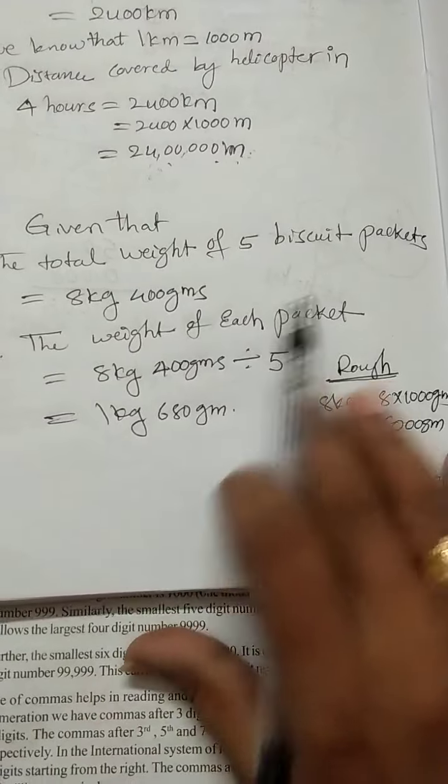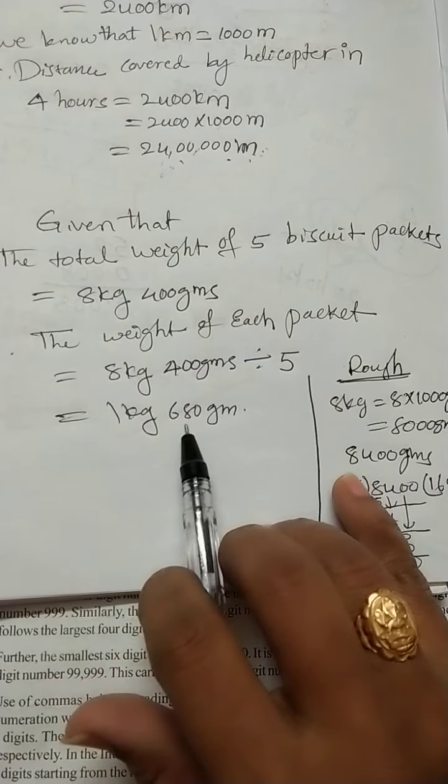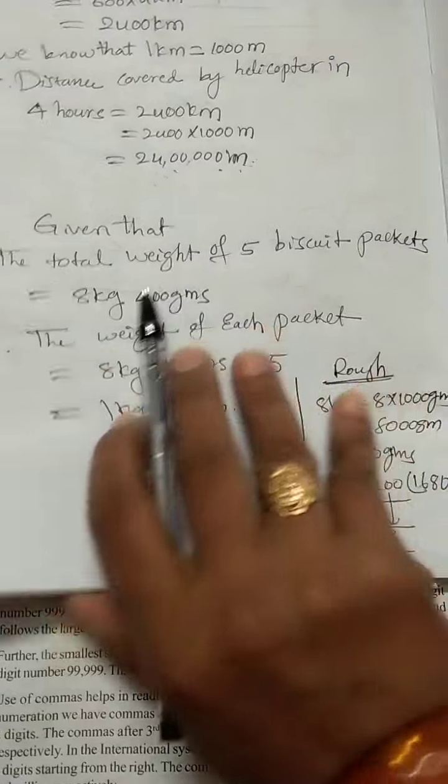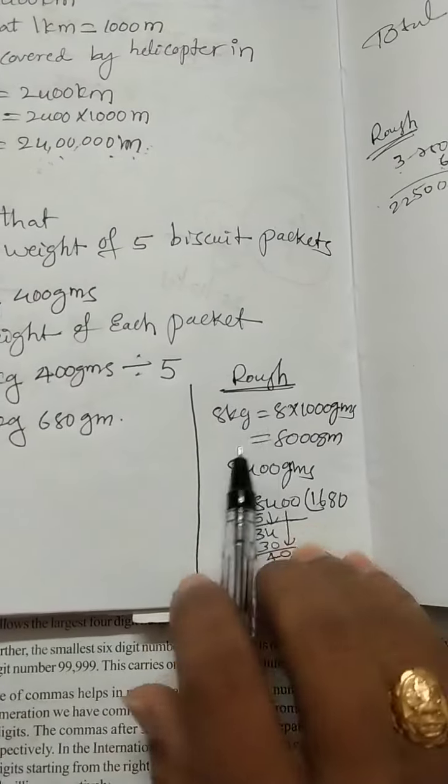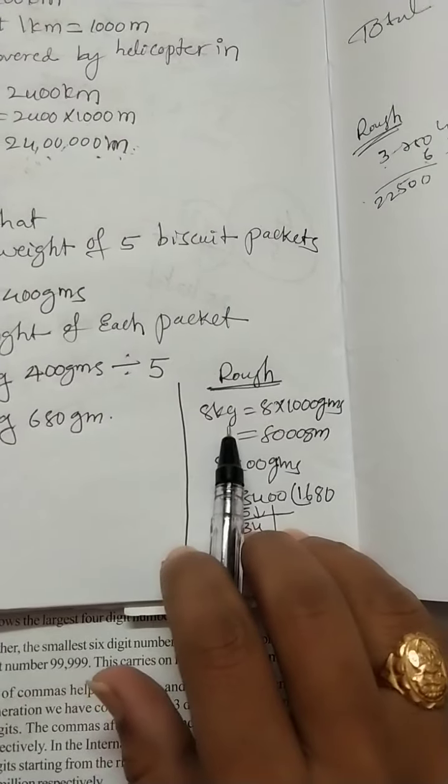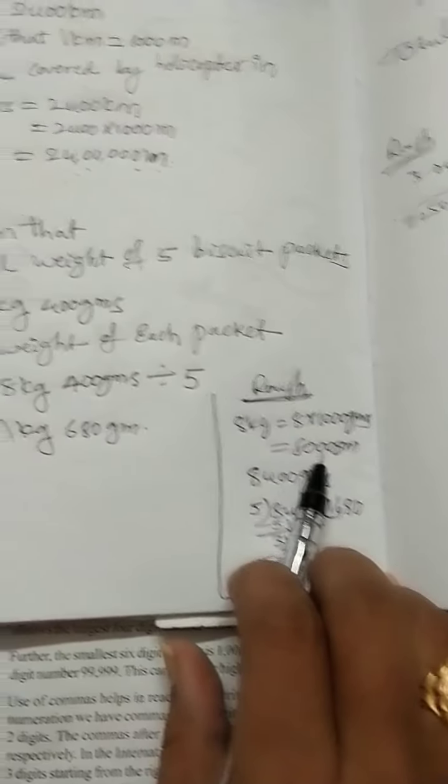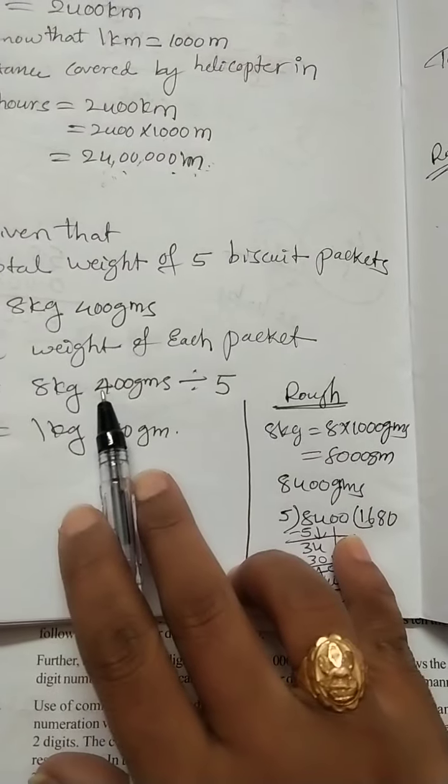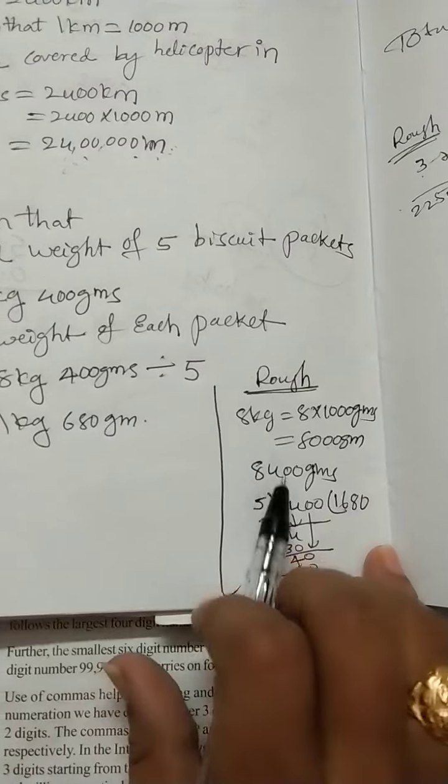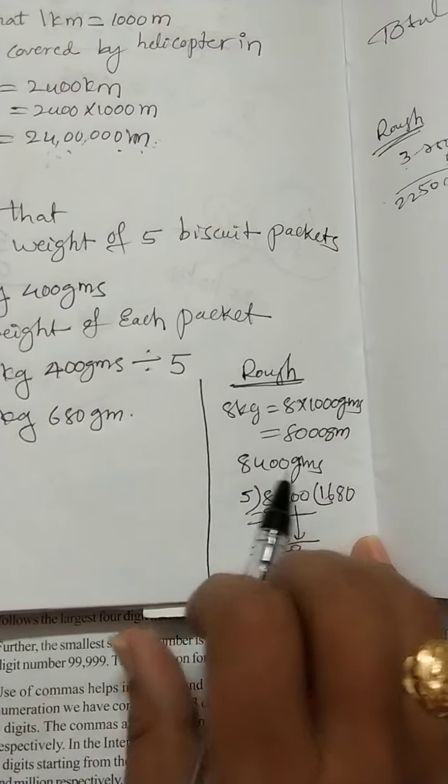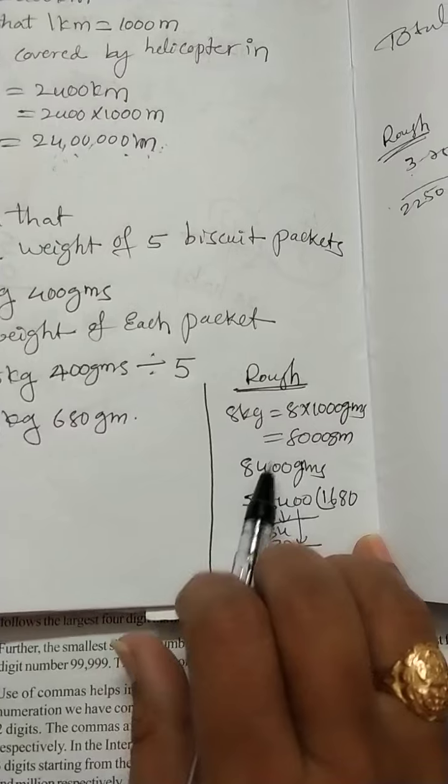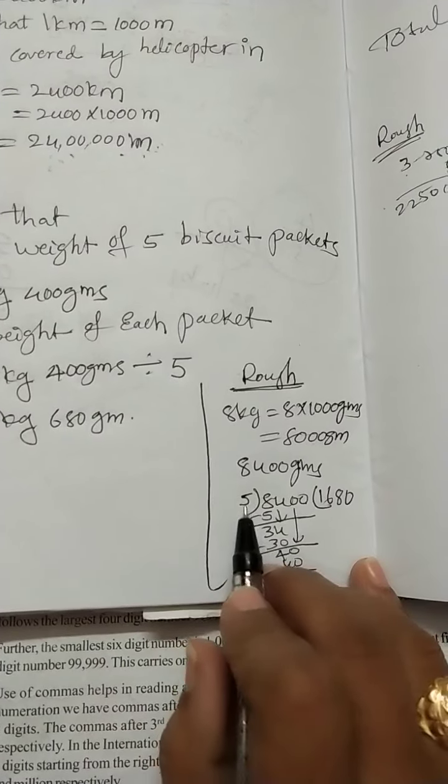If you divide, we will get 1 kg 680 grams. Let's do the rough work. 8 kg converted to grams is 8000 grams. 8000 grams plus 400 grams equals 8400 grams. Divide 8400 grams by 5.